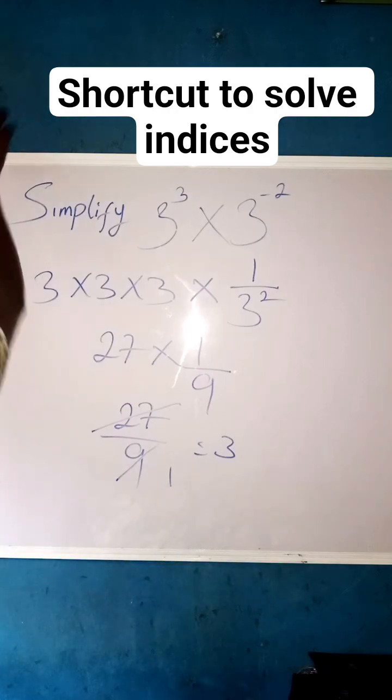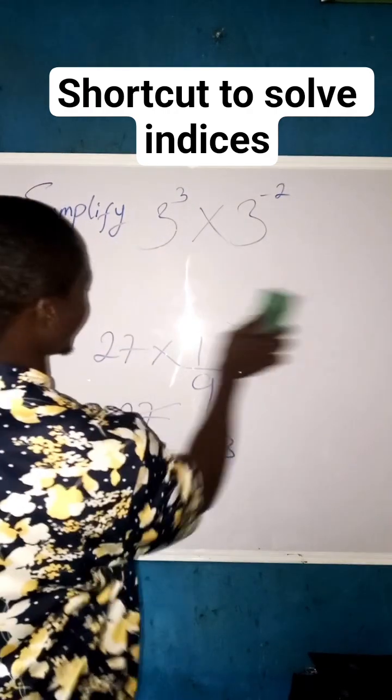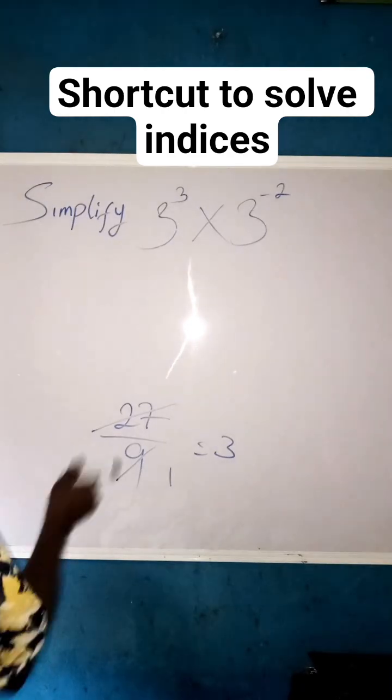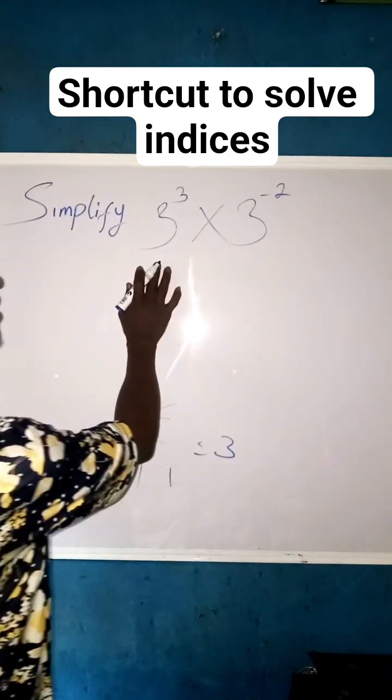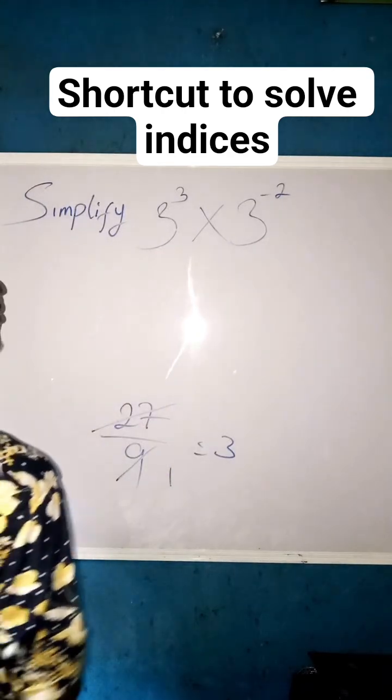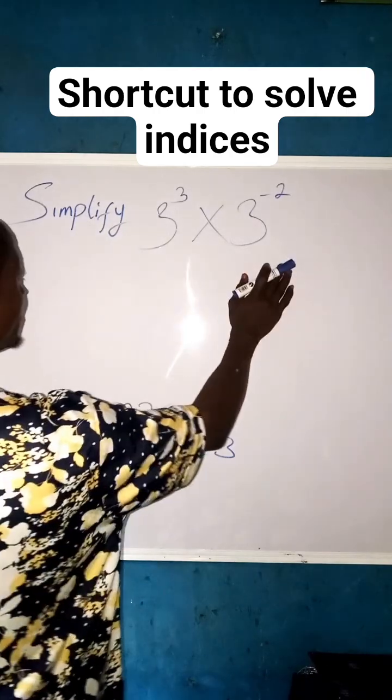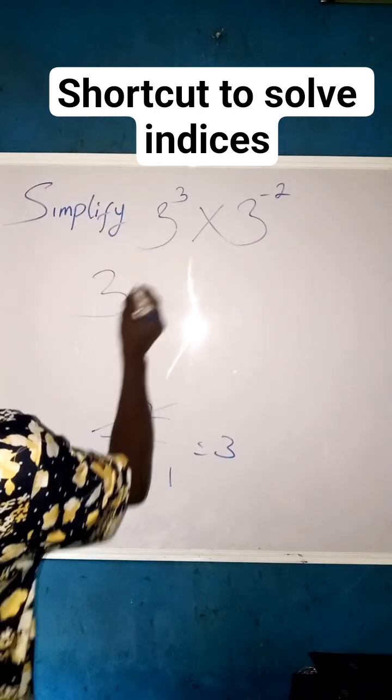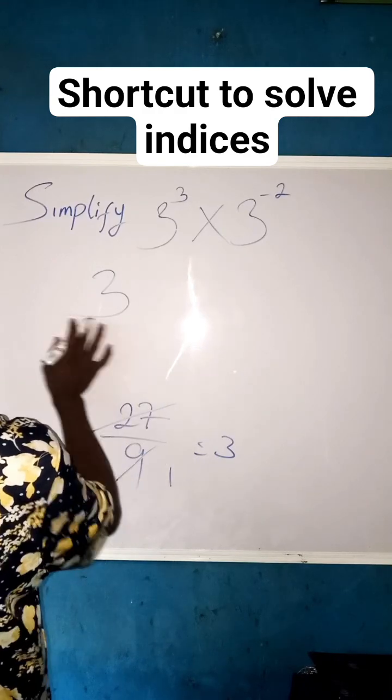Let us solve in the other method, the shorter method. Now the shorter method here, in all of this it says that if we are having the same base, what you have to do is to pick one base then add the powers. So pick one base which is 3 here.